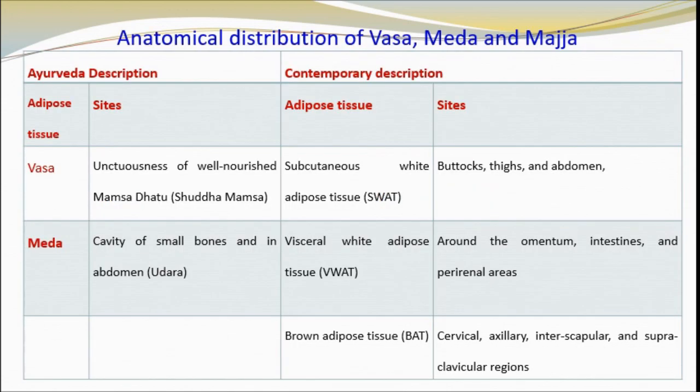Regarding the anatomical distribution of Vasa, Medha and Majja — Vasa is the unctuousness of well-nourished Mansa Dhatu and may be considered as subcutaneous white adipocytes. Its site is buttocks, thighs and abdomen. The site of Medha is the cavity of small bones and abdomen, and in contemporary science it may be considered as visceral white adipocytes, located around the omentum, intestines and perirenal areas. Medha is also considered in contemporary science as brown adipocytes, with sites in cervical, axillary, intrascapular and suprasclavicular regions.